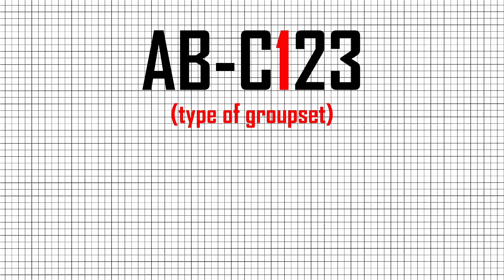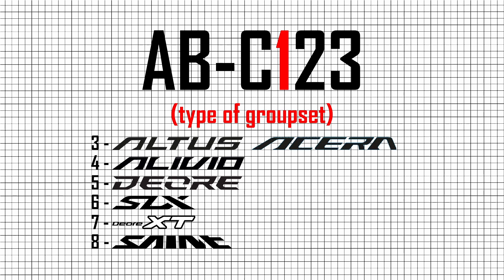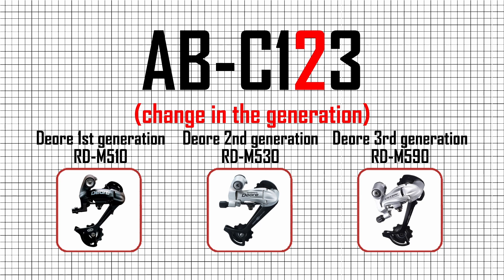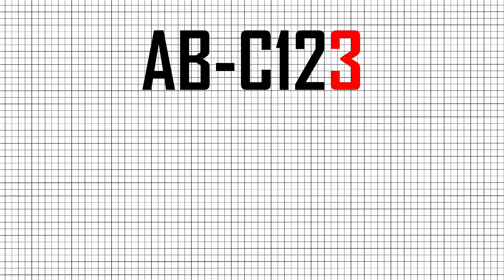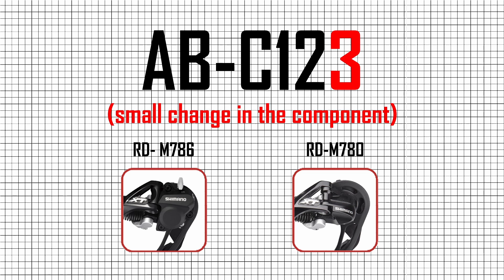Between 1999 and 2016, the numbers represented: 3 for Alivio and Altus groupsets, 4 for Revo groupsets, 5 for Deore groupsets, 6 for SLX groupsets, 7 for XT groupsets, 8 for Saint groupsets, 9 for XTR groupsets. The second number, 2, indicates a change in the generation of the component — not necessarily sequential, but always higher. The third number indicates a small upgrade within its generation. For example, a Shimano XT rear derailleur RD-M786 will be equipped with a clutch, compared to the RD-M780 model.